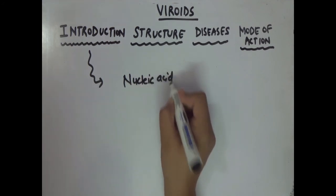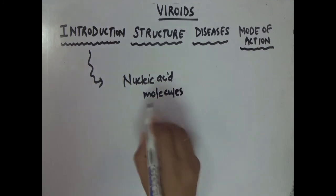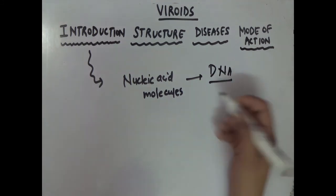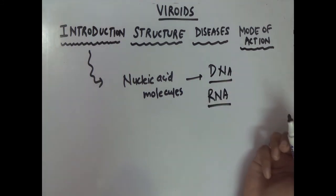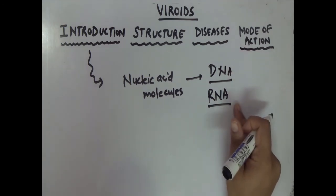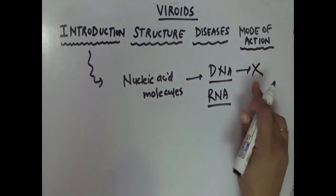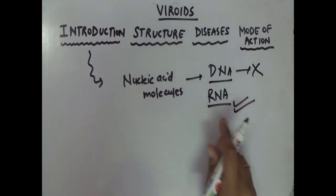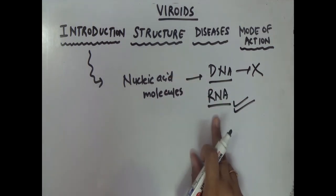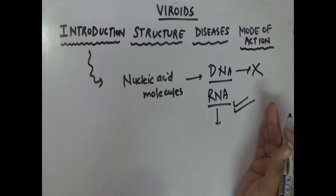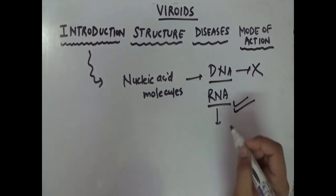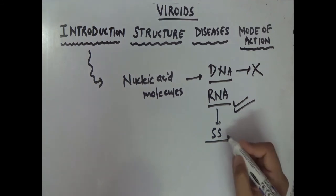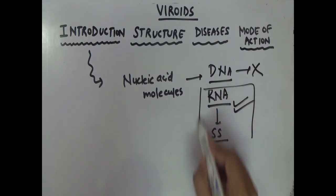Viroids are nucleic acid molecules. Now, nucleic acid includes DNA (deoxyribonucleic acid) and RNA (ribonucleic acid). Remember, viroids are not DNA molecules — they are having only RNA. RNA exists in single-stranded and double-stranded forms, and viroids are the single-stranded form of RNA.